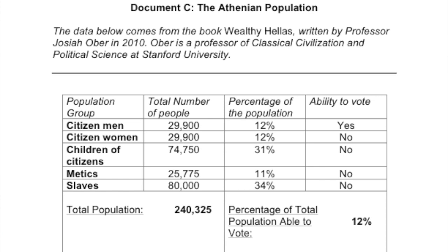Looking at the percentage of the population, most of Athens — 34% — were slaves. Metics make up 11%, children 31%, and men and women each make up 12%. But when you look at the ability to vote: citizen women? No. Children of citizens? No. Metics? No. Slaves? No. The only people who could vote were citizen men — just 12% of the actual population.